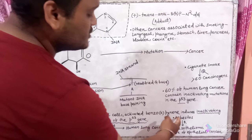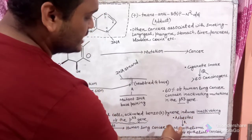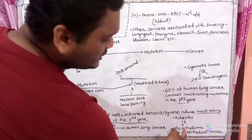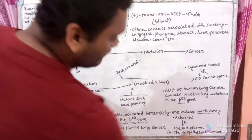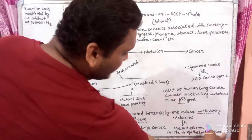Exposure to asbestos results in mesothelioma, which is a type of epithelial cancer.